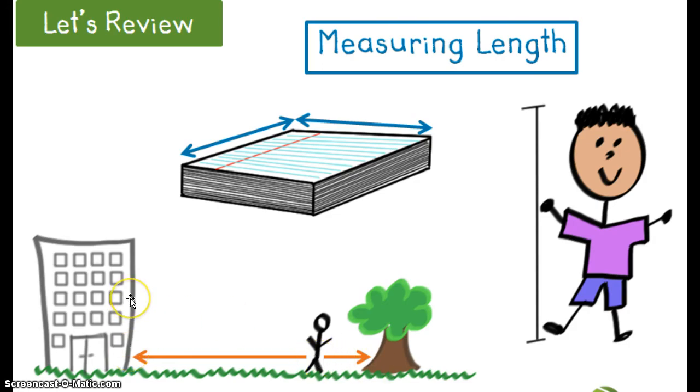Well, if I know that the distance from the building to the tree is 10 feet, and the distance from the tree to the person is 2, I would go 10 minus 2, and 10 minus 2 is 8. So the distance from the person to the building would be 8 feet.